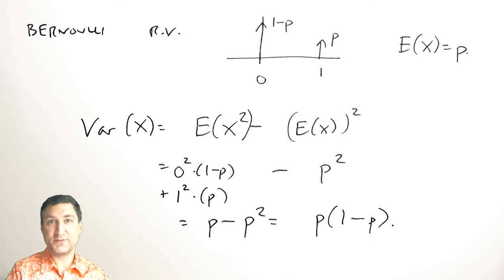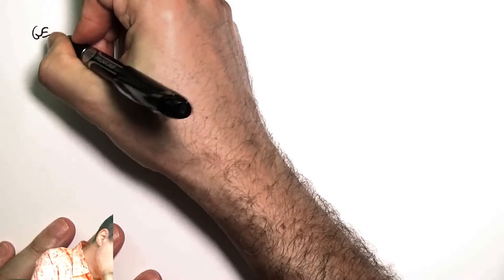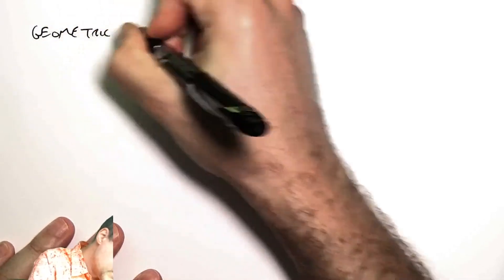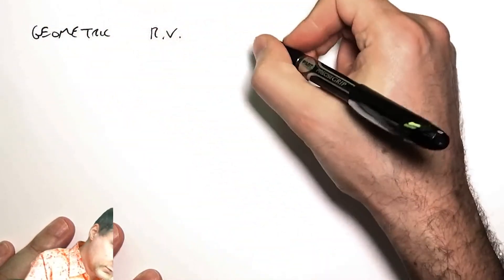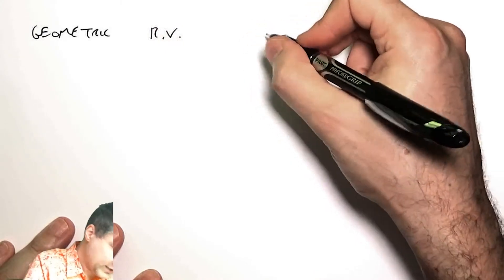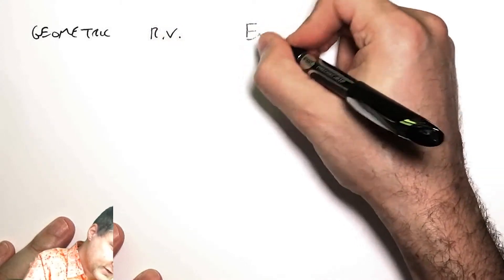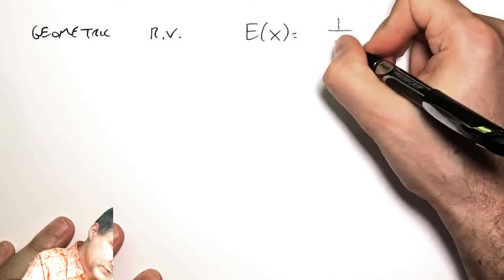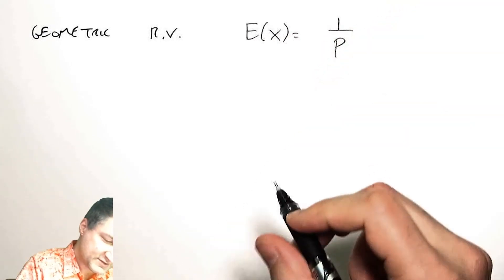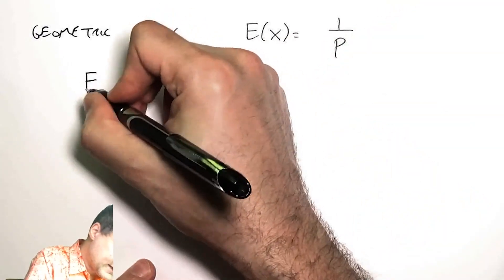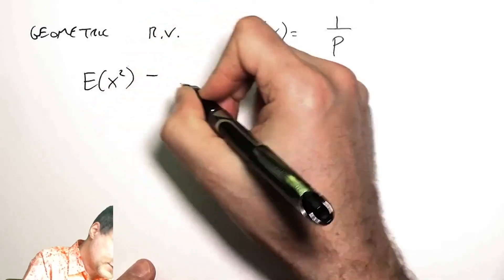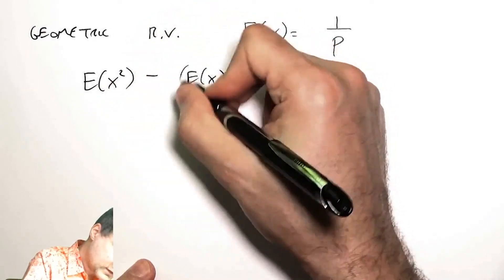What is the expected value of some other stuff that we know? The geometric random variable. This is going to be a more complicated one. We know that the expected value of this, we found out, was 1 over p from a previous derivation.